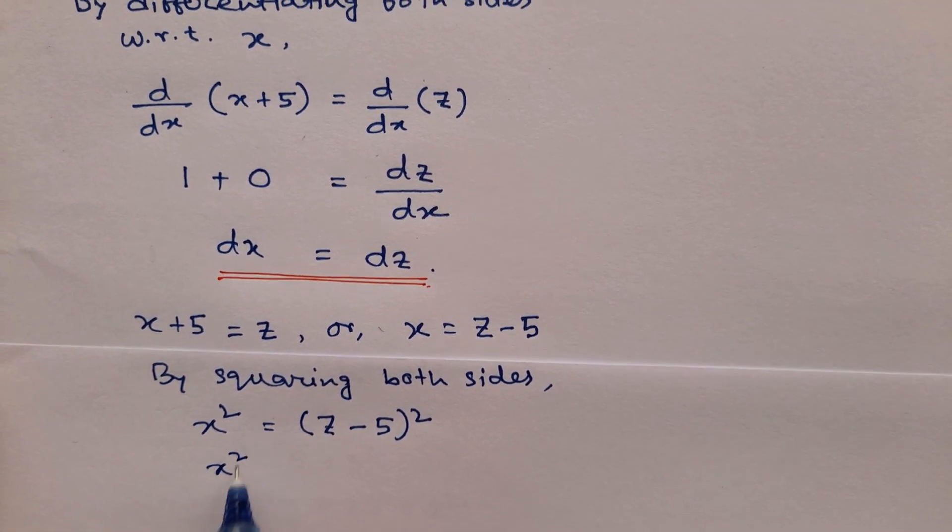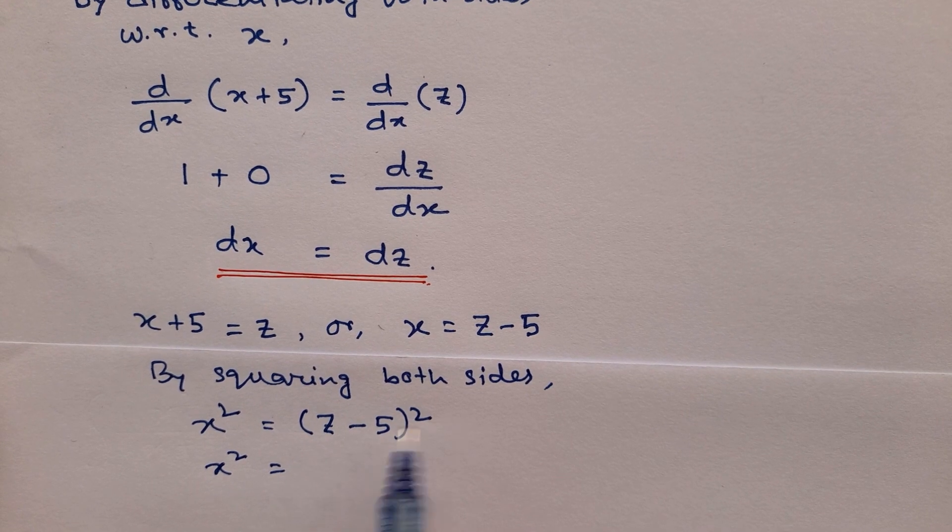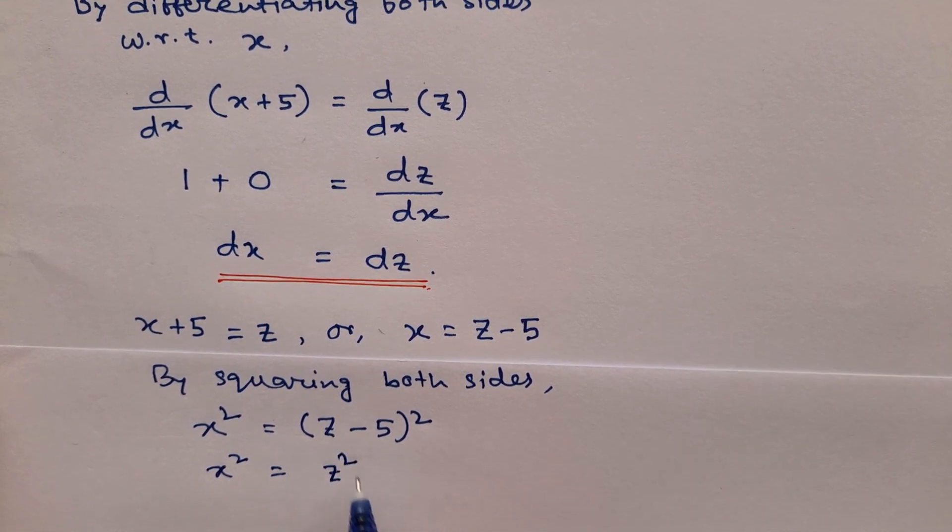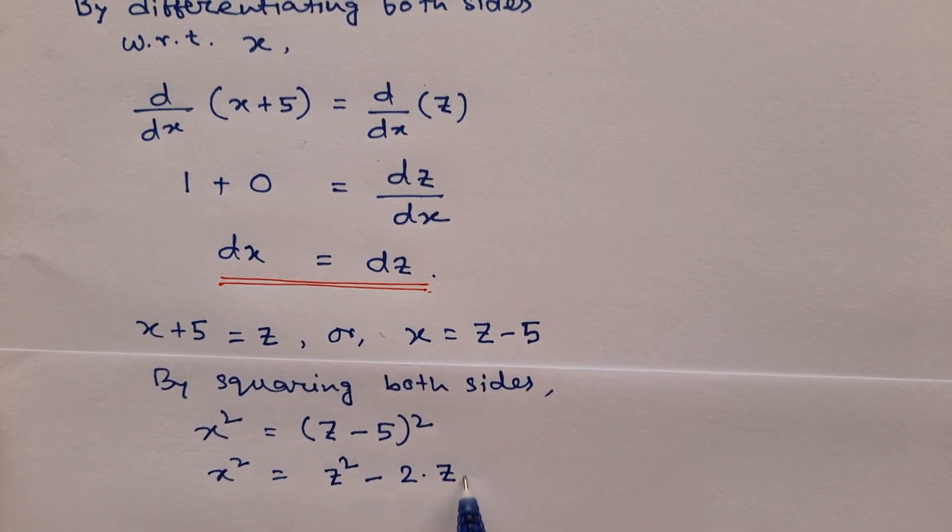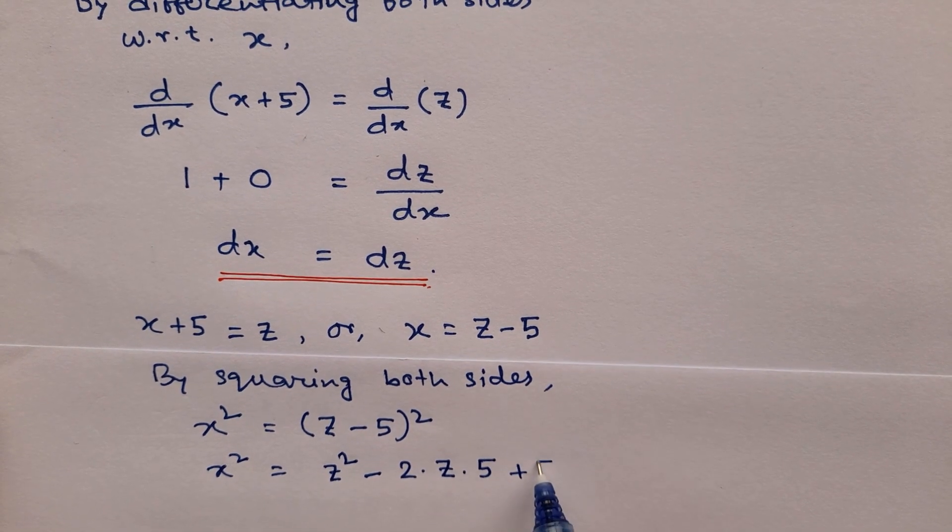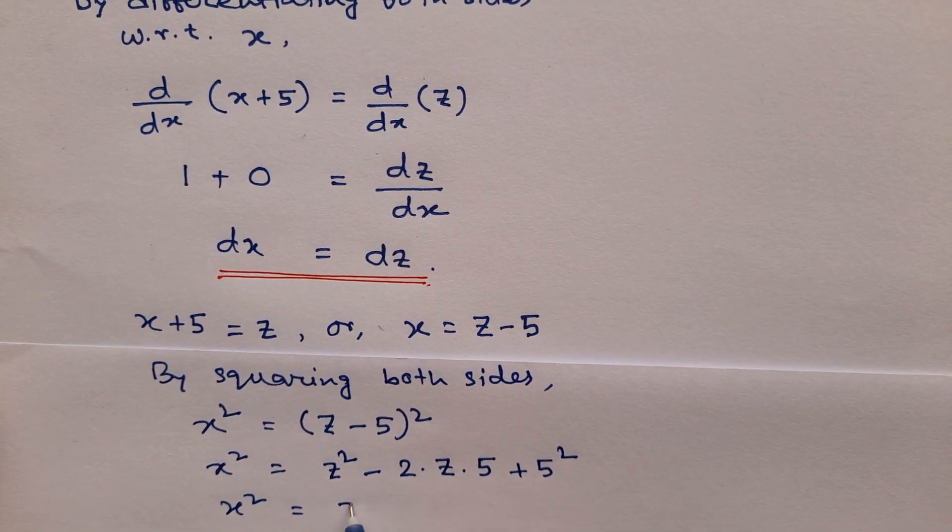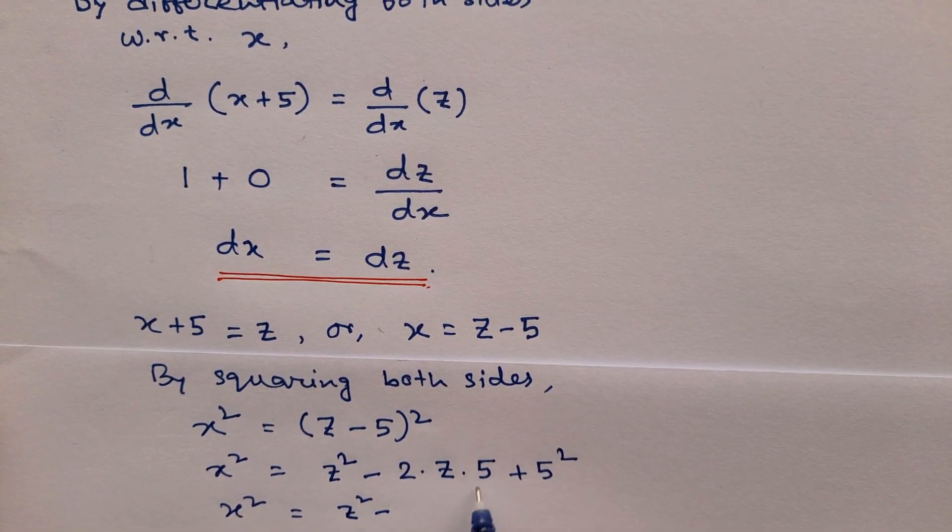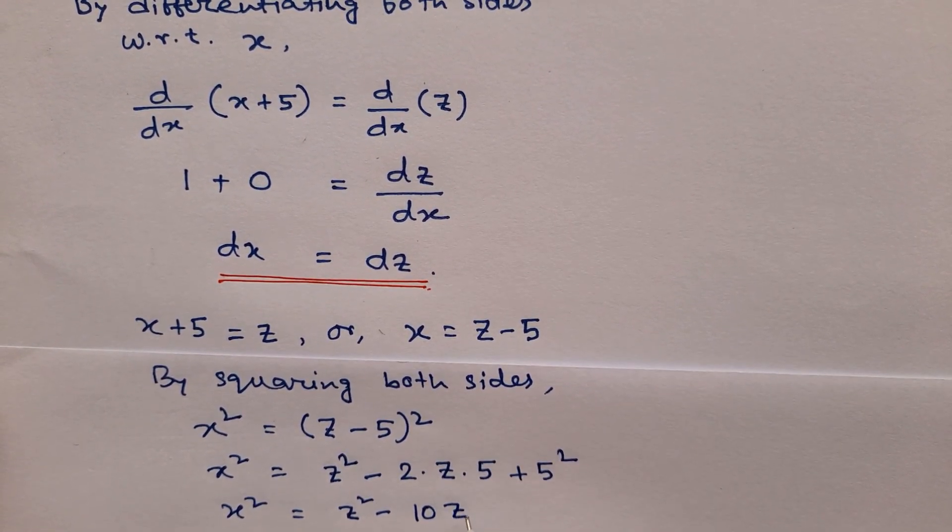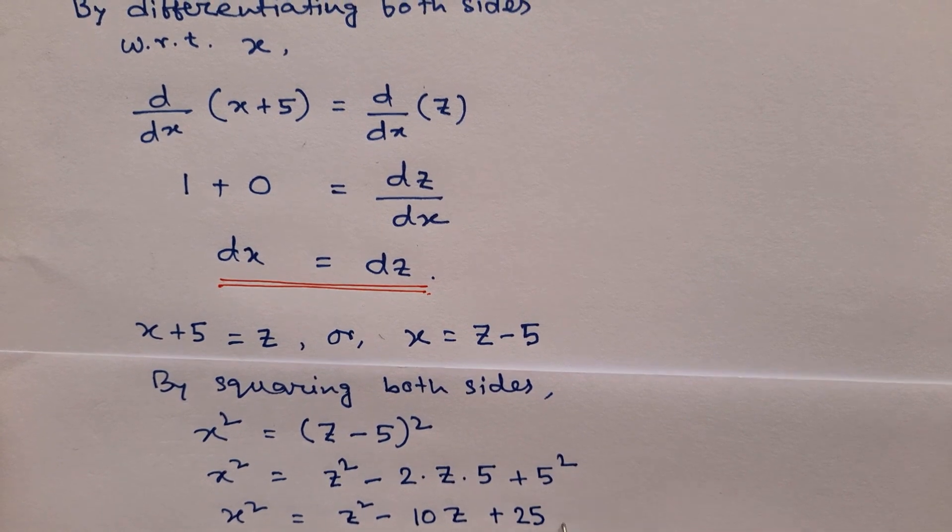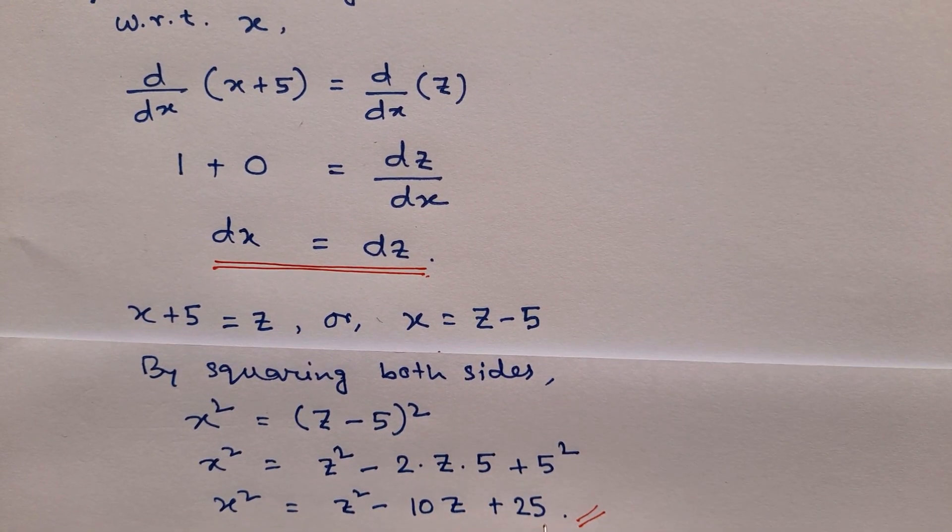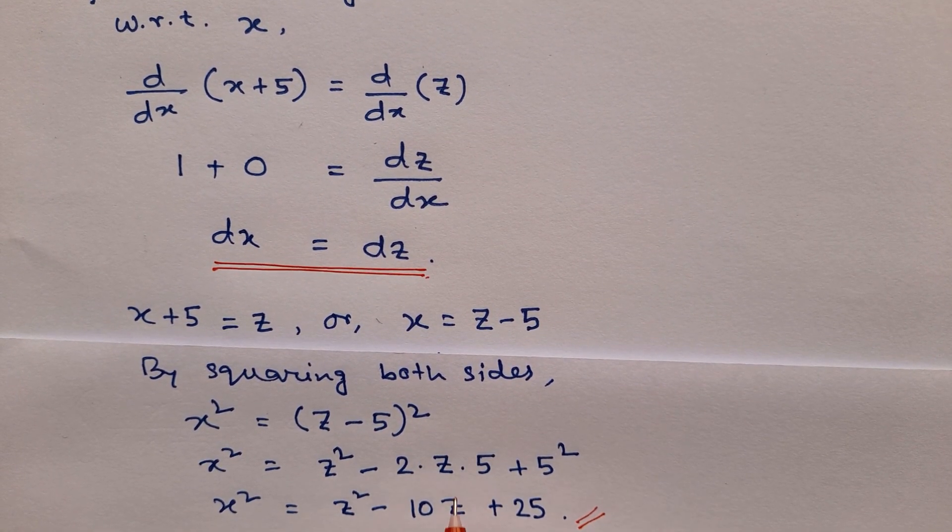We now break this as a minus b whole square. This will be z squared minus 2 times z times 5 plus 5 squared. Or we can say that x squared equals z squared minus 10z plus 25. This value we will now substitute into the problem.